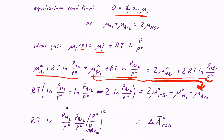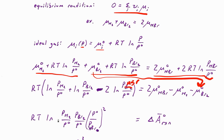Rearranging further, the sum of these logs is the log of the product. So instead of adding log(P(H₂)) and log(P(Br₂)) and subtracting log(P(HBr)), I combine them into a single log of this product: P(H₂)/P° times P(Br₂)/P° divided by (P(HBr)/P°)². Since the stoichiometric coefficient is 2, the HBr term is squared, and the negative sign turns it upside down, placing P(HBr)² in the numerator.